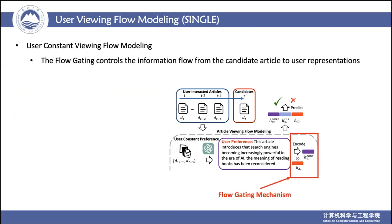Next, we designed a mechanism called flow gating. During constructing user representations, the flow gating mechanism aims to control the flow of semantic information from candidate articles to the user representation by using the representations of extracted user preference.